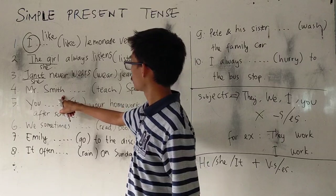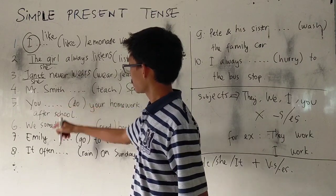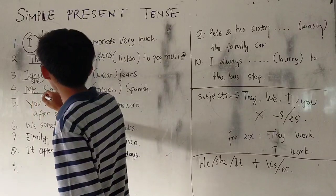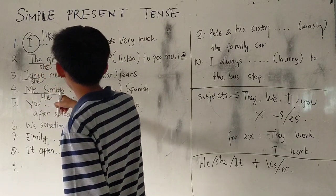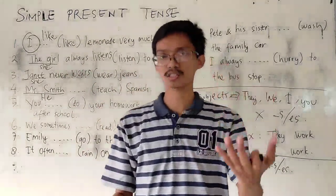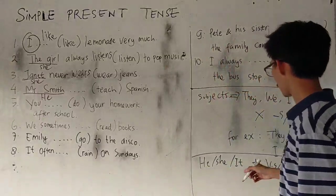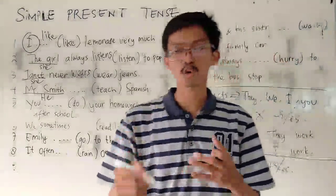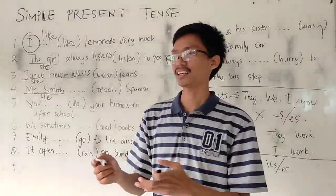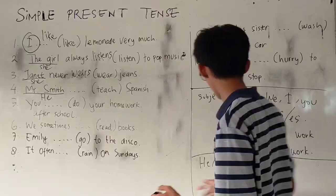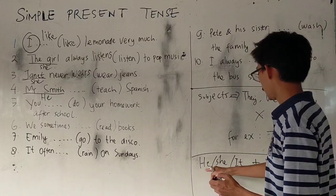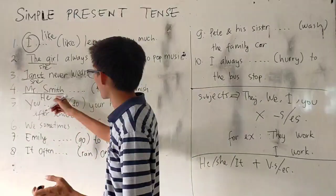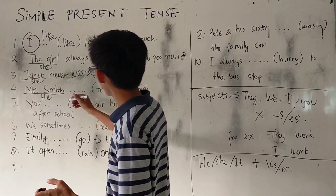Number four: Mr. Smith. Mr. Smith is a man, so you can change it into 'he.' Mr. Smith — teach or teaches? Remember, if the subjects are he, she, or it, you have to add S or ES to the verb. So Mr. Smith teaches. That's correct.